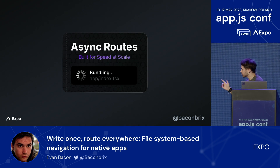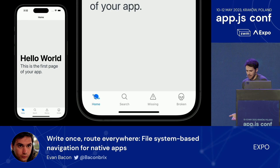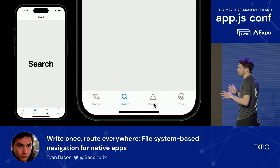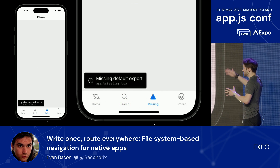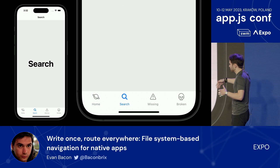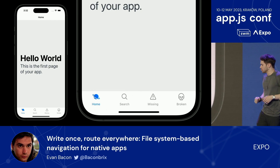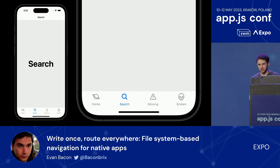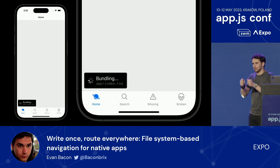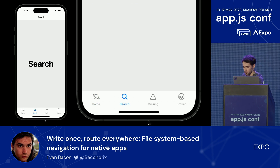With Async Routes, every screen is automatically deferred until you request it. It's lazily loaded with Suspense — you get a bundle indicator as it's bundling, it shows up, it's cached, so you can come back and test the instant transition. This leads to much faster startup time in development, because no matter how big your app is, you're now only bundling one page at a time — effectively bundled at the same speed as an app with one page.